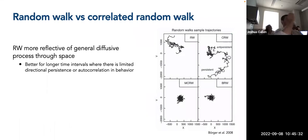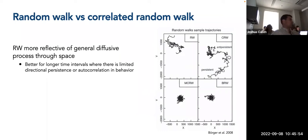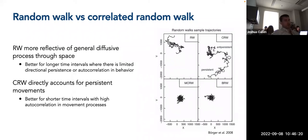Comparing a random walk versus a correlated random walk as process models: a random walk is more reflective of a general diffusive process through space, better suited for tracks with longer time intervals where there's limited directional persistence or autocorrelation in behaviors. A correlated random walk more directly accounts for persistent movements often found in animal telemetry data — much better for short time intervals where from one point to the next, the animal is likely doing the same thing, exhibiting high autocorrelation.